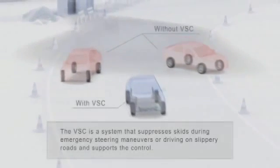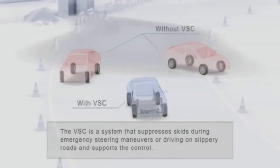See how the red cars without VSC experience oversteer or understeer, while the blue car with VSC suppresses skids and maintains control.